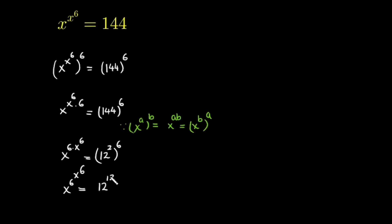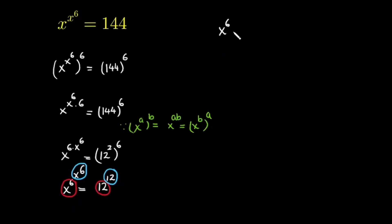From here you can easily compare: the left hand side has x raised to the power 6 as the base, with x raised to the power 6 in the exponent; and the right hand side has 12 as the base, with 12 in the exponent. So when we compare both sides, x raised to the power 6 is equal to 12.